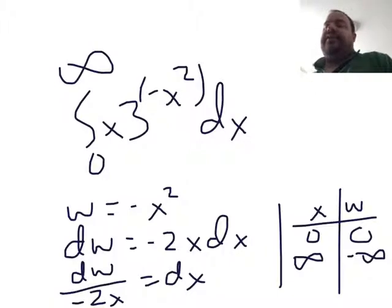So I have to do a w-substitution here because I know how to do 3 to the w, not 3 to the negative x squared. So we'll make w that inner thing, minus x squared. We want the w to be simple usually. And so dw is going to be minus 2x dx, and then dx will be dw over the minus 2x. And that works out because that x will cancel this one.